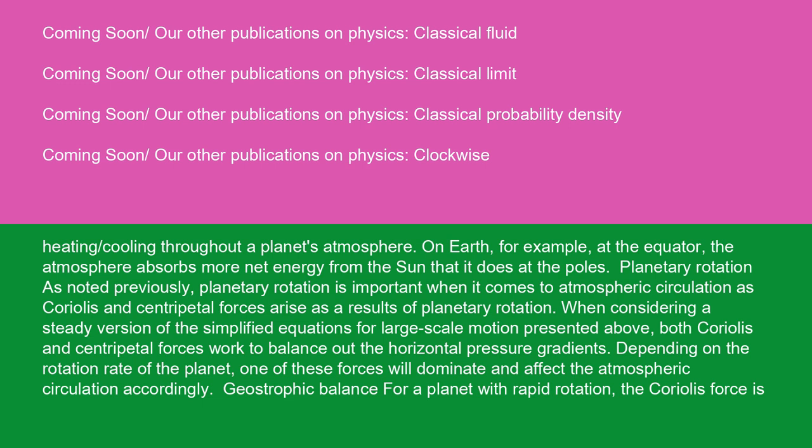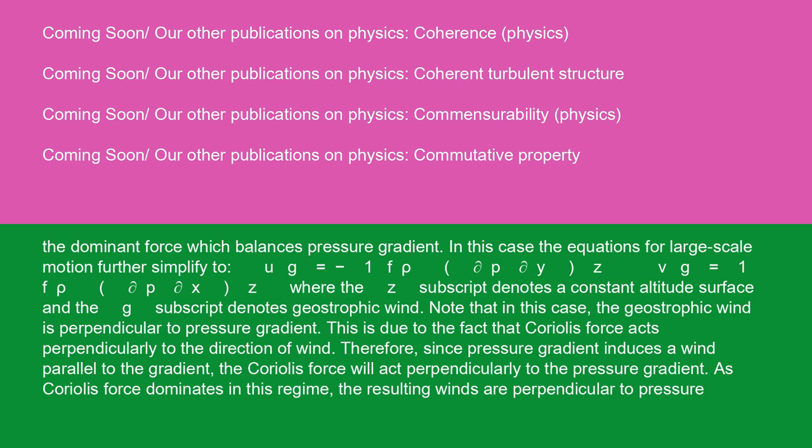Geostrophic balance: for a planet with rapid rotation, the Coriolis force is the dominant force which balances pressure gradient. In this case, the equations for large-scale motion further simplify to: u_g = -1/(fρ) (∂p/∂y)|_z, v_g = 1/(fρ) (∂p/∂x)|_z, where the z subscript denotes a constant altitude surface and the g subscript denotes geostrophic wind. Note that in this case, the geostrophic wind is perpendicular to pressure gradient.